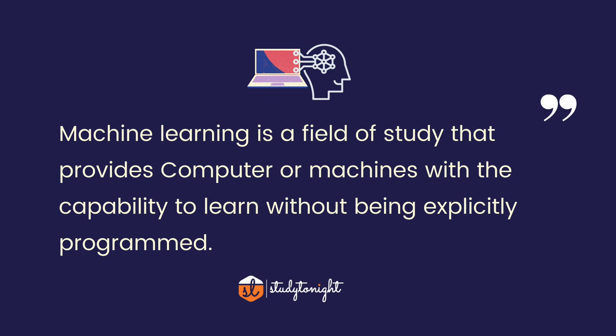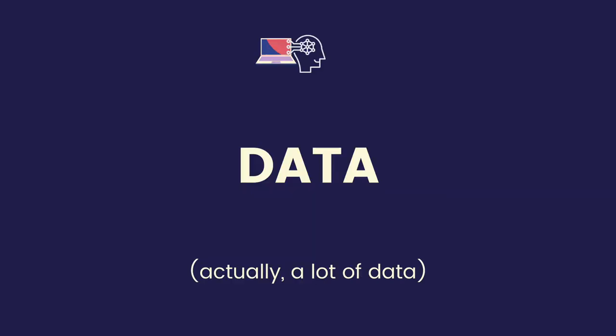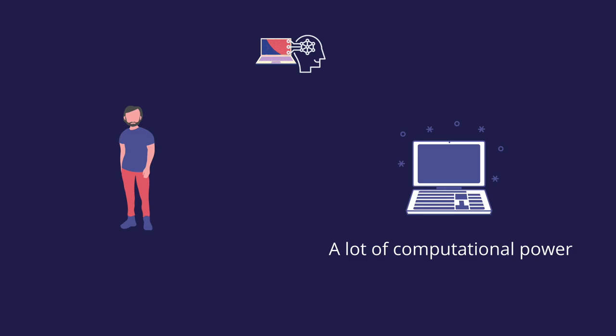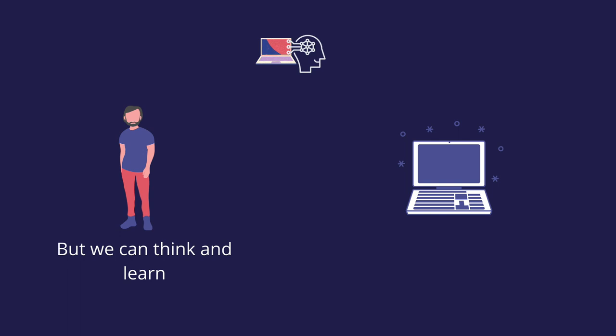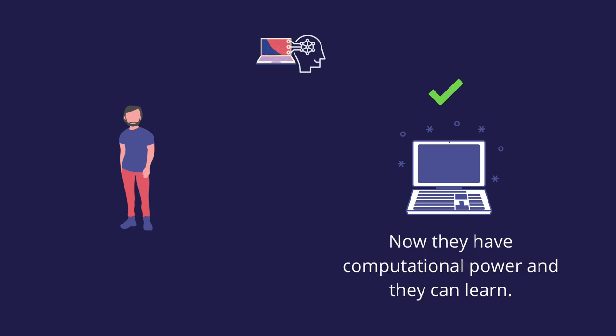As mentioned in the definition, machine learning enables computers or programs to perform actions without being explicitly programmed to do so. But they would need something — a computer is not a god after all. They need data, lots and lots of data. This is where we use the computational power of computers, which we humans don't have. But we humans have the power to think and learn. In the modern world, faced with a choice to either increase our own computational power or make computers think, we chose the latter — we worked towards making computers learn, as they already had immense computational power to process terabytes of data within minutes.